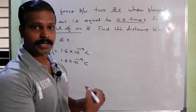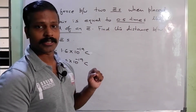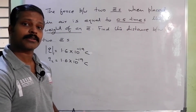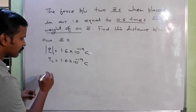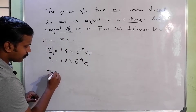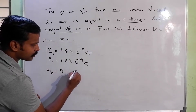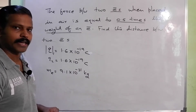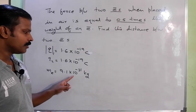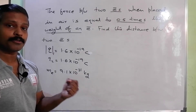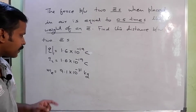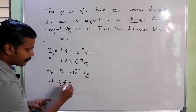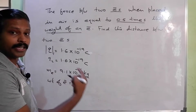We have to find the distance. The force is equal to the weight of an electron — 0.5 times the mass of the electron. The mass of the electron is equal to 9.1 into 10 raised to minus 31 kg. We have the weight of the electron.